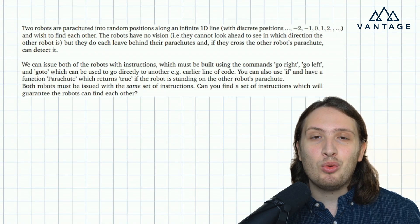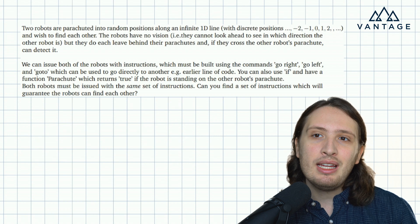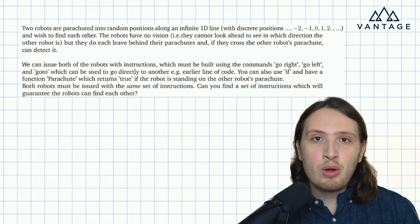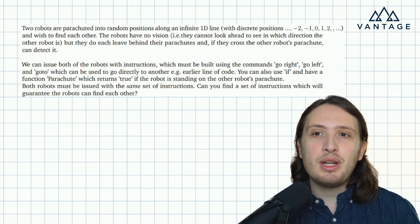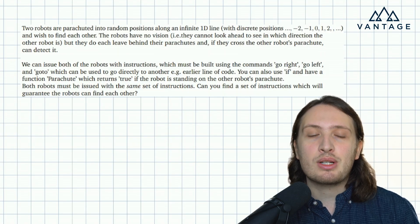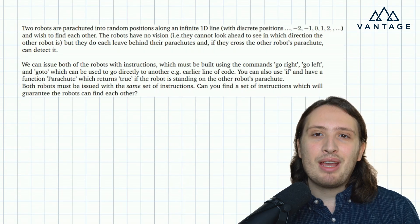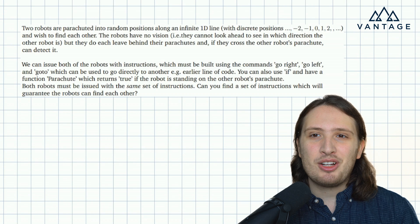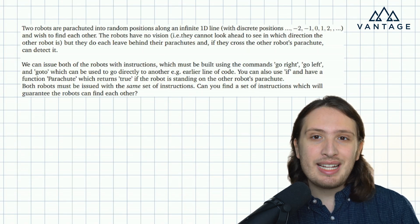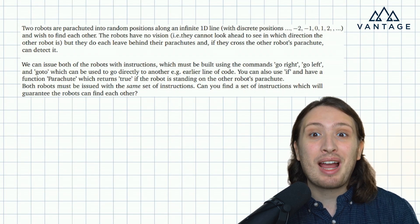The robots have no vision — they can't look ahead to see in which direction the other robot is — but they do leave behind their parachutes when they start moving. And if they cross the other robot's parachute, they have an ability to detect it. We need to issue both robots with instructions built using only the commands: go right, go left, and go to, which can be used to go to another line of code. We can also use if, and we have a function parachute(), which returns true if the robot is standing on the parachute and false otherwise. The key subtlety is we need to issue both robots with the same set of instructions — we can't give a different set to each. We need to find instructions that guarantee the robots can find each other.